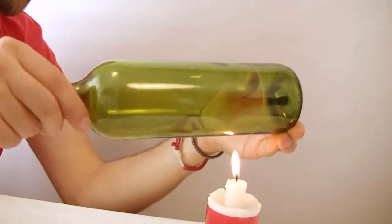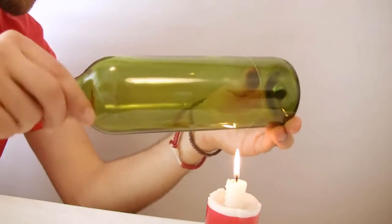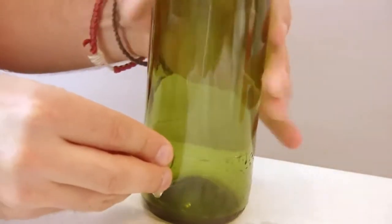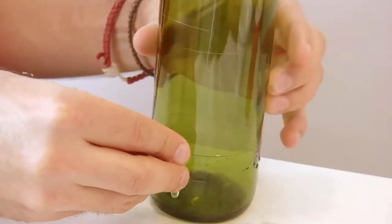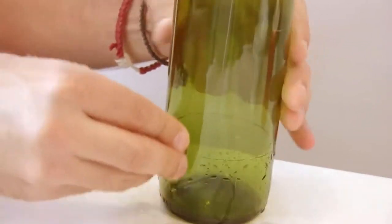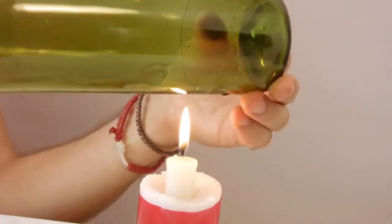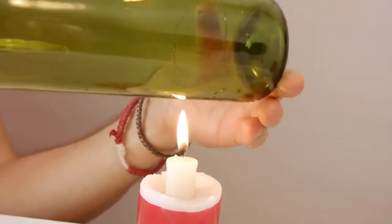Once the line is scored, heat it up on a candle and cool it down on ice. Repeat the procedure until the bottle splits in two pieces.